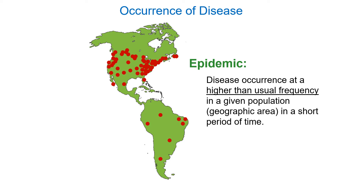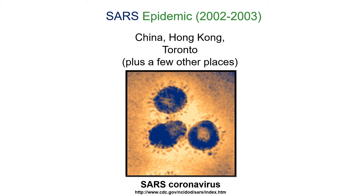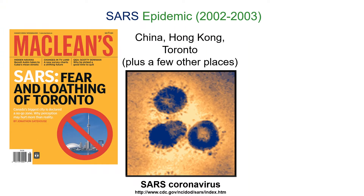An epidemic is when we have a higher-than-usual frequency of cases. For example, in 2002 and 2003 we had a SARS epidemic. We're hearing a lot more about SARS coronaviruses now — COVID-19 is caused by SARS coronavirus 2. The original SARS happened in China, Hong Kong, Singapore, Toronto, and a few other places. One person from Hong Kong flew to Toronto and caused more than 200 people to get sick; out of about 238 cases, 43 people died.